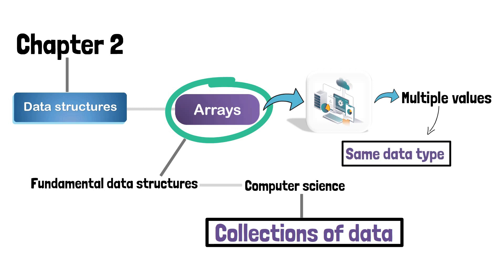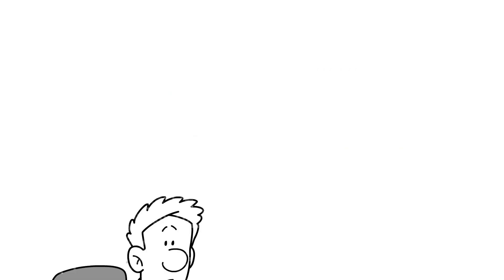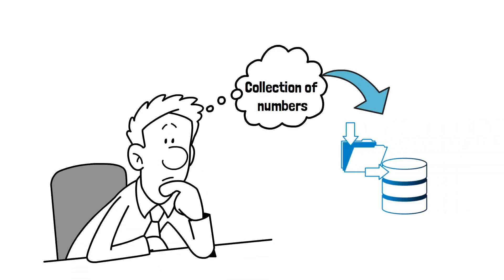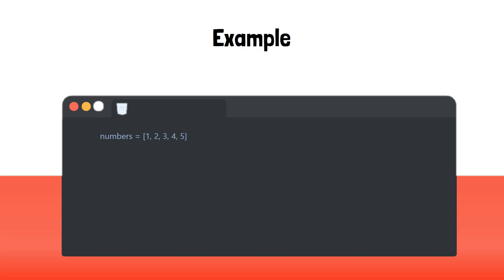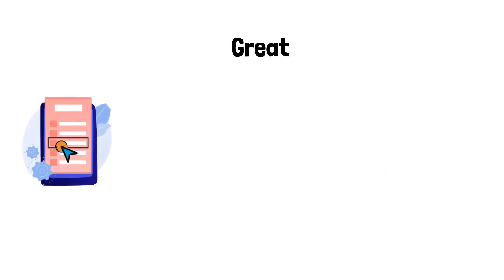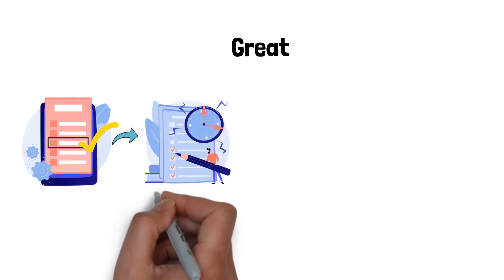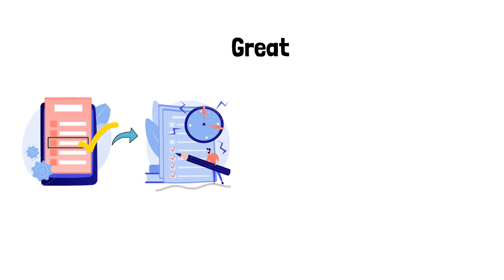Let's take a look at a simple example of an array. Imagine you have a collection of numbers and you want to store them in a single variable. One way to do this is to create a list. This is great, but what if you want to access a specific number in the list? You would need to loop through the entire list and check each number until you find the one you're looking for. This can be time-consuming and inefficient, especially if the list is very large.